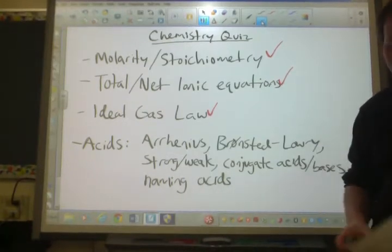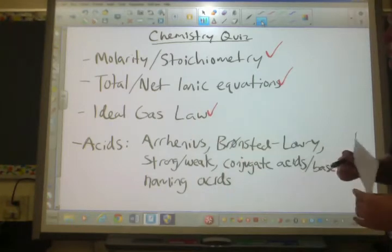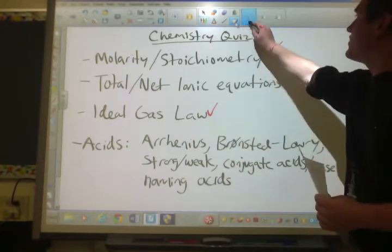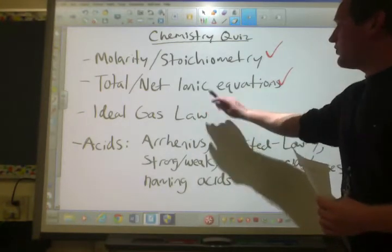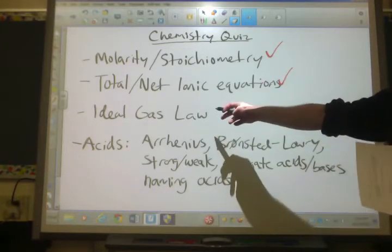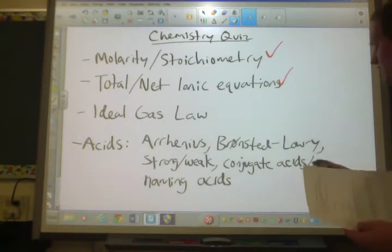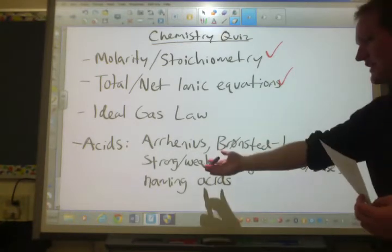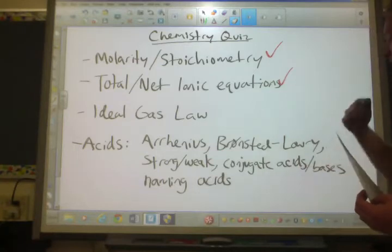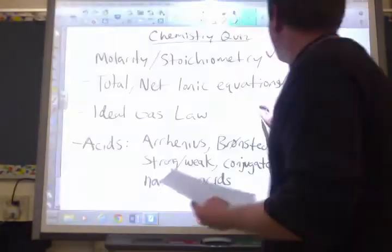Okay, in this video I'm going to go over the molarity, stoichiometry, and net ionic equations homework. I'm also going to talk a little bit about the quiz. So on the quiz, it's going to be all these topics. These two are covered on this worksheet. Make sure you know ideal gas law, make sure you know R for gases, know your Arrhenius Bronsted-Lowry definitions, know the ideas of strong versus weak acids, know conjugate acid bases and naming acids. Okay, let's go into the worksheet.